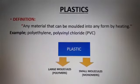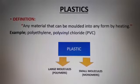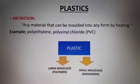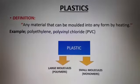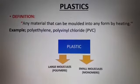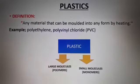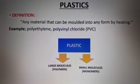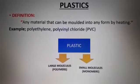Next we will see plastic. Plastic is any material that can be molded into any form by heating. Examples are polyethylene and polyvinyl chloride. Plastic is made up of two types of molecules: small molecules called monomers and large molecules called polymers. Plastics are large molecules, also called polymers, which are further made from the smaller molecules called monomers.